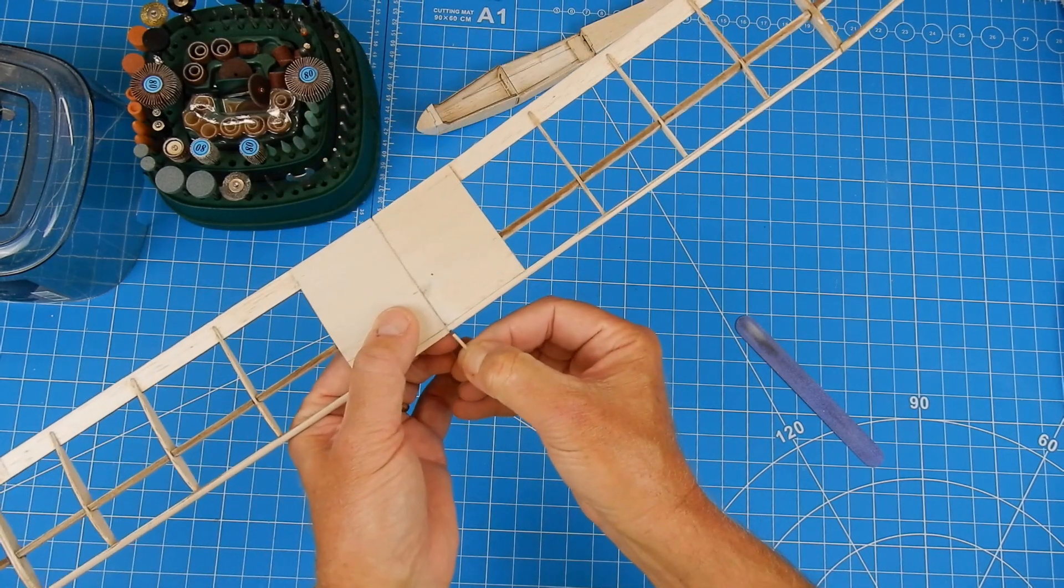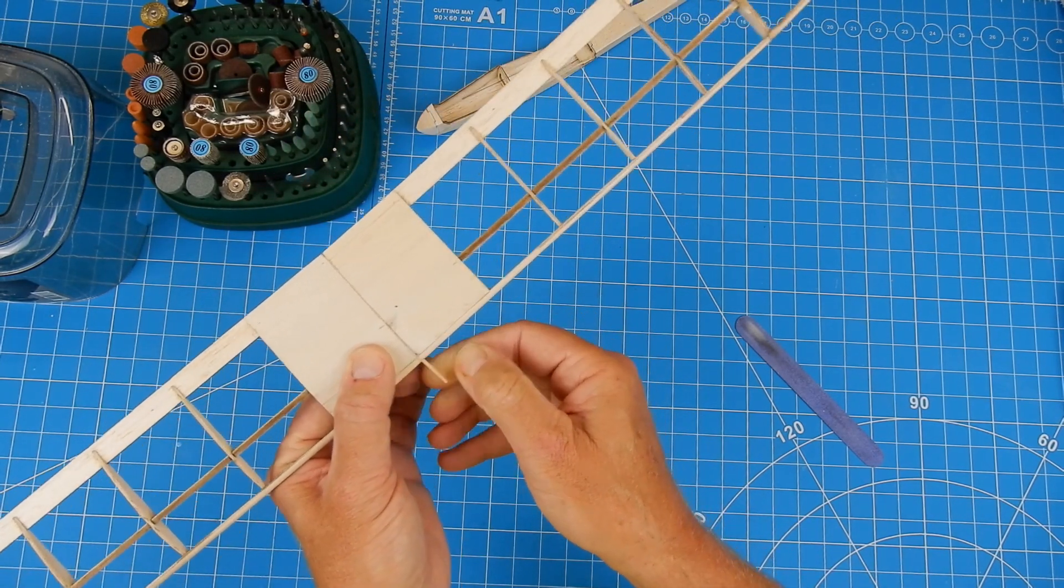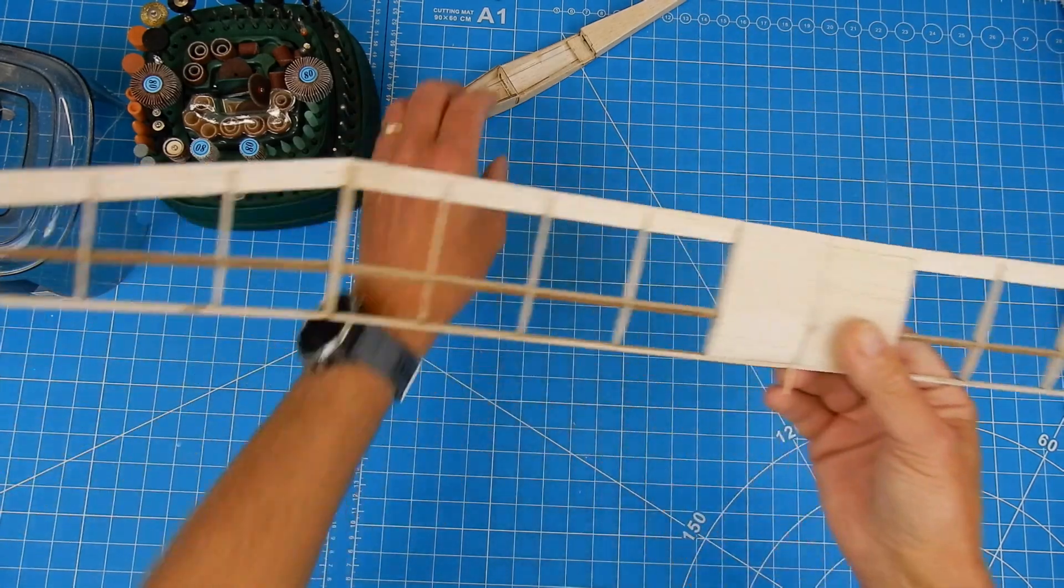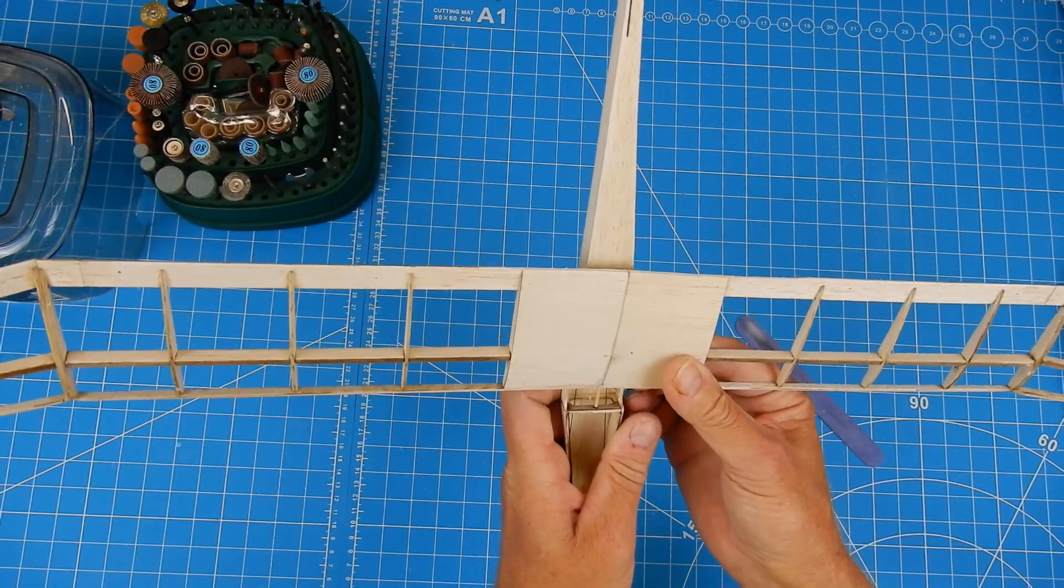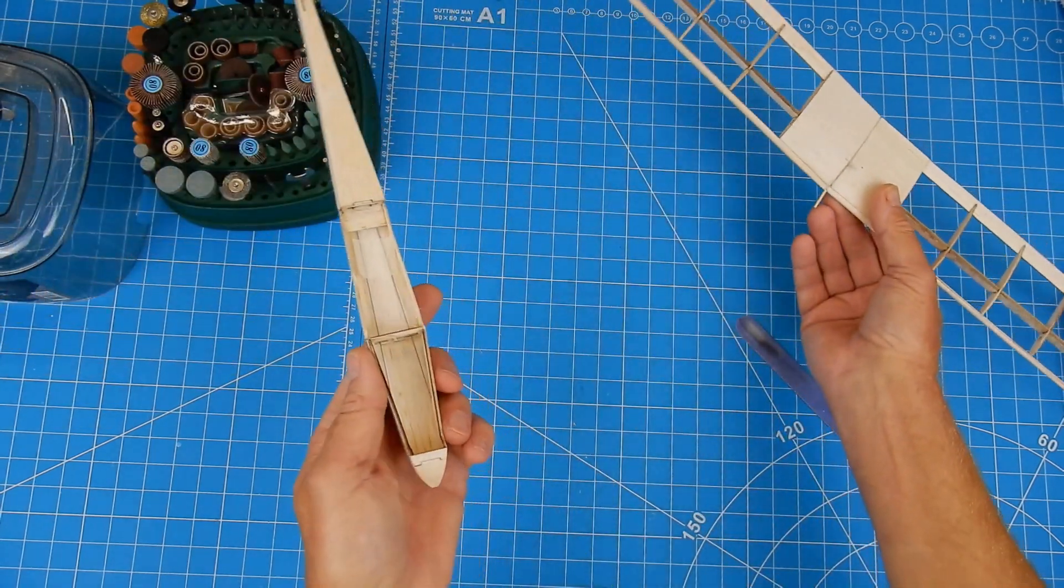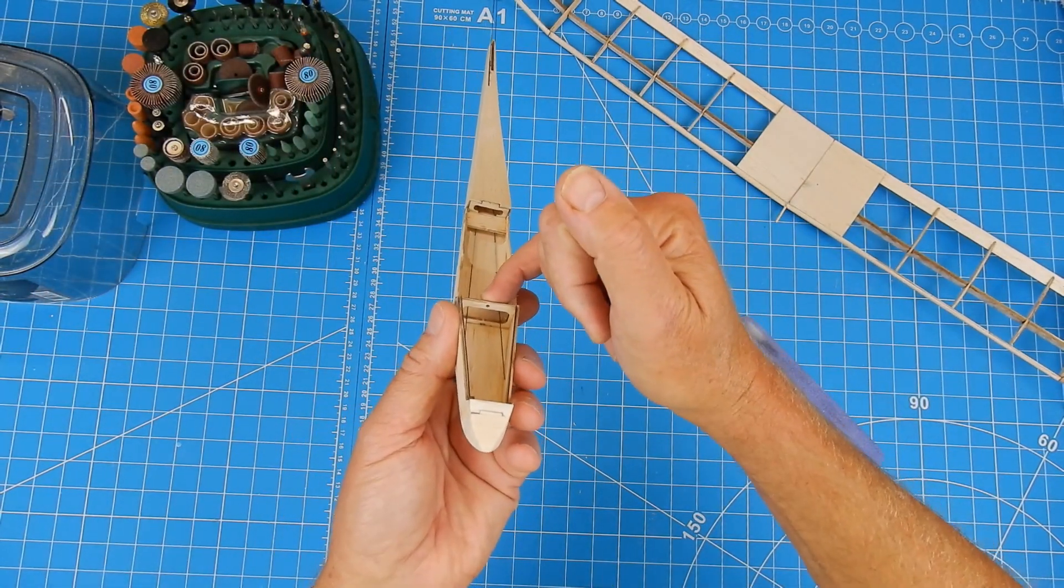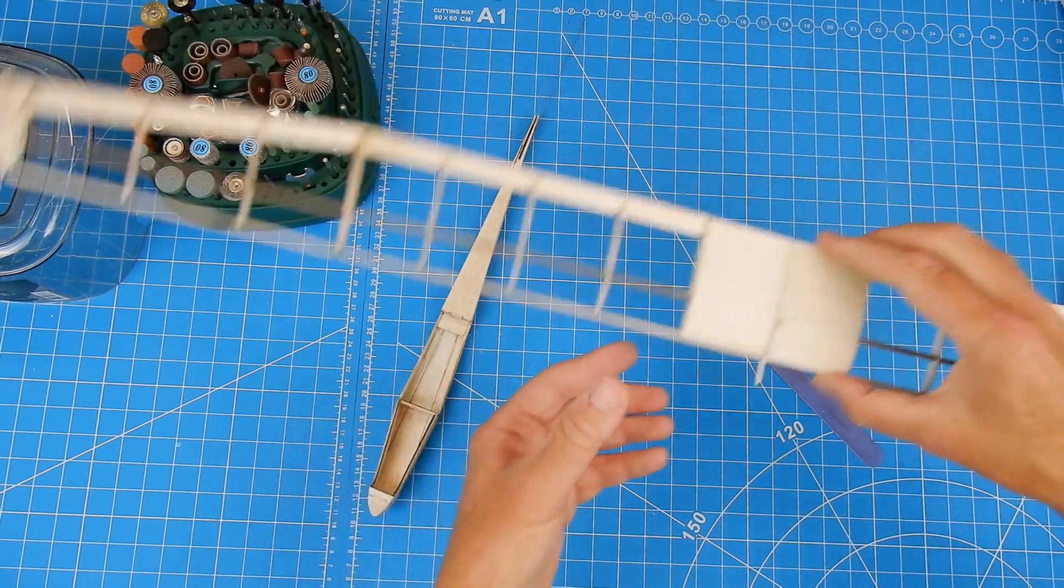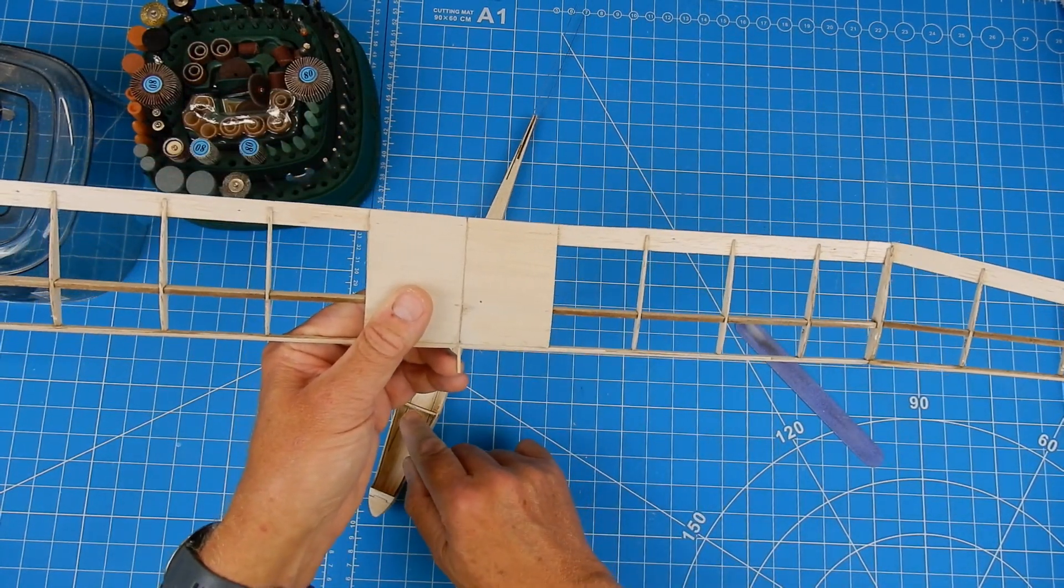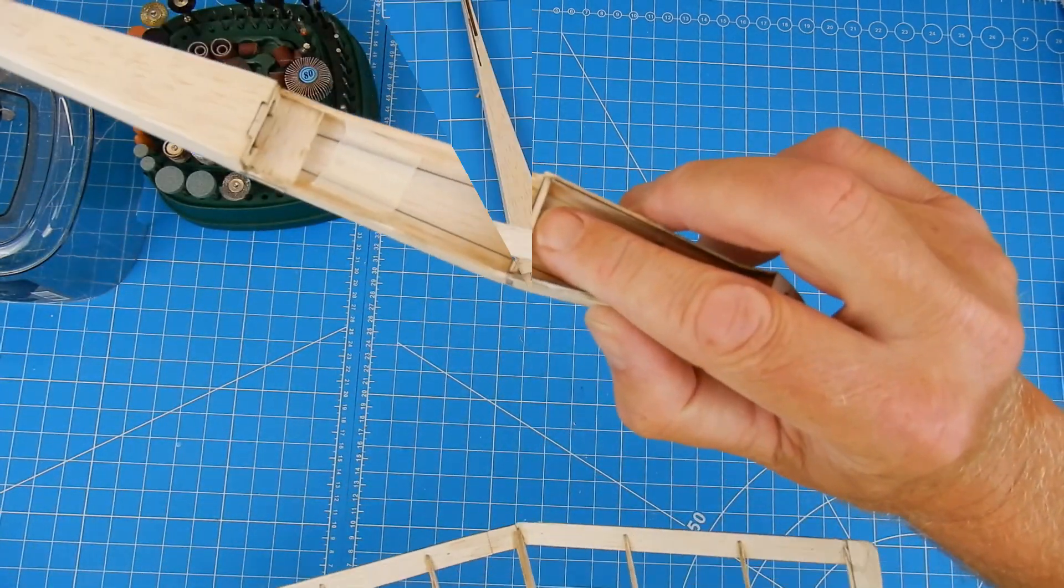So just checking that I've got the nice bit of depth there and then what we're going to do is I'm going to need to relieve this hole slightly and then when I'm happy with that I'm just going to cut this just bigger than that former.